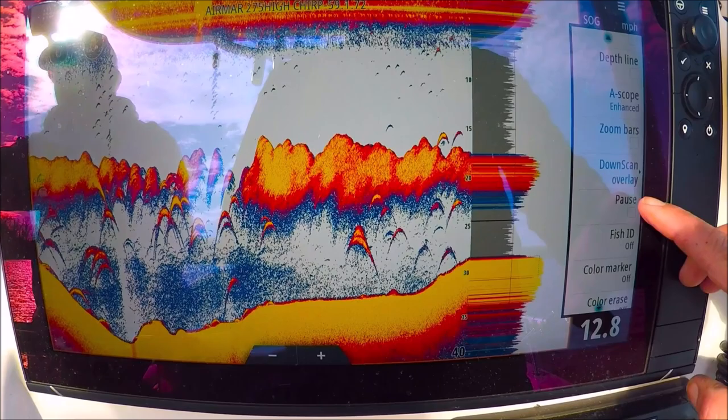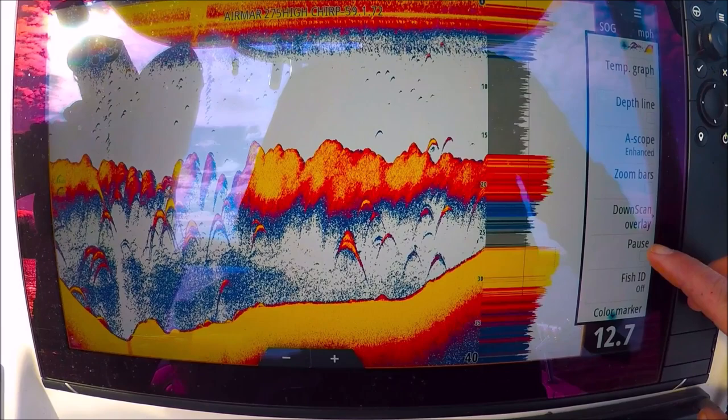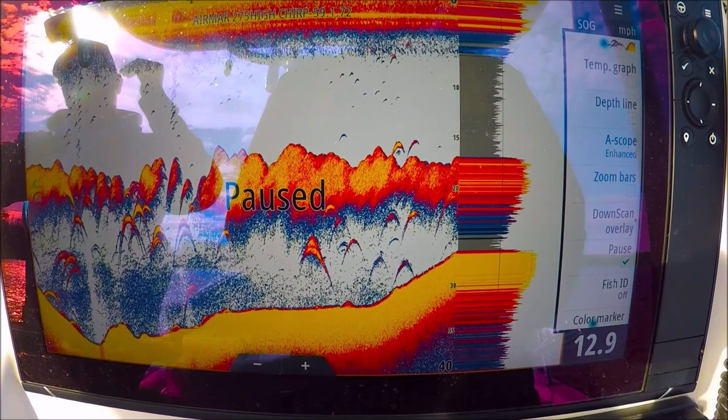Pause. This just pauses our sonar here. This is really good to do if you're going to sit in your driveway and work on your machine. If you have a chirp transducer, it's never good to run them for a long time out of the water. They can overheat and be damaged. So, that's why you have that pause option.